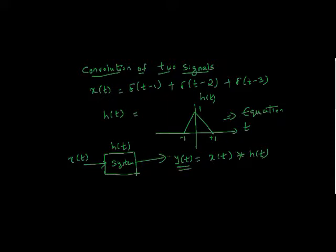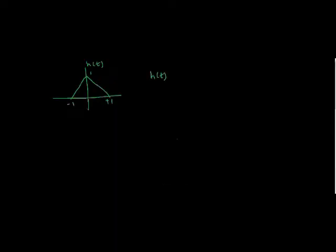Let's see how to find the equation of this h of t. This is our signal h of t — more precisely, it is the impulse response of the system. We need to represent this impulse response in terms of a unit step or ramp function, whichever basic signal we are aware of. Since we can see a triangle signal here, we can express it with a ramp function.